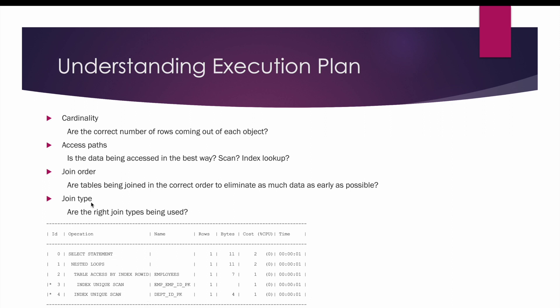Fourth is join type — whether the right type of join is used when joining two tables. The different join types are nested loop, hash join, and sort merge join. For example, in this execution plan Oracle has made use of the nested loop join. We will talk more about the different join types in the forthcoming sessions.